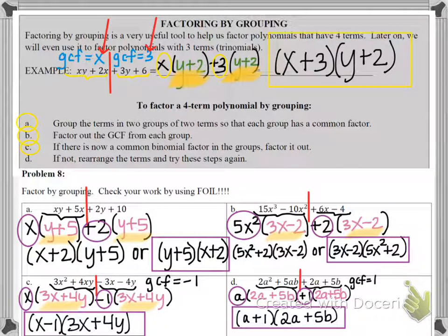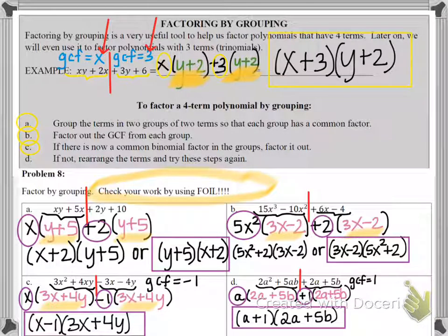Now, you'll notice I didn't check my work using FOIL like the directions said. I'll leave that up to you. But if you do FOIL on all four of our final answers, you'll wind up with a four-term polynomial that will match the original problem. So you know that you've done your problems correctly.